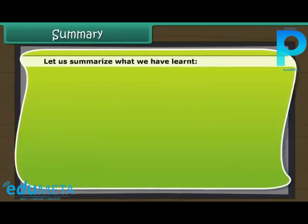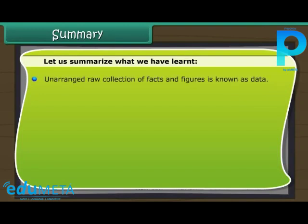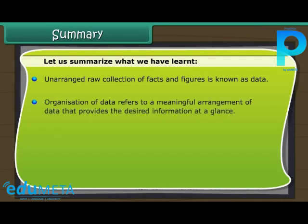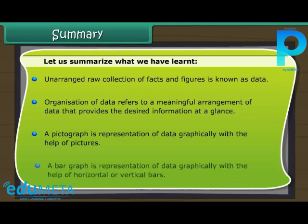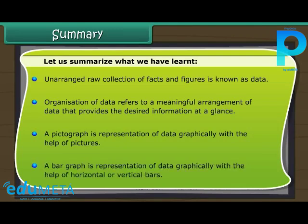Let us summarize what we have learned. Unarranged raw collection of facts and figures is known as data. Organization of data refers to a meaningful arrangement of data that provides the desired information at a glance. A pictograph is a representation of data graphically with the help of pictures. A bar graph is a representation of data graphically with the help of horizontal or vertical bars.